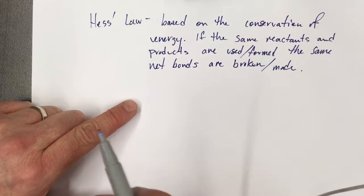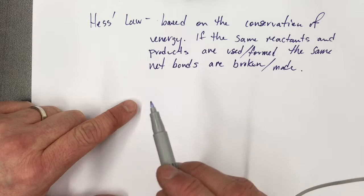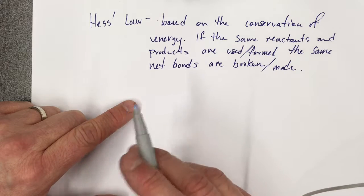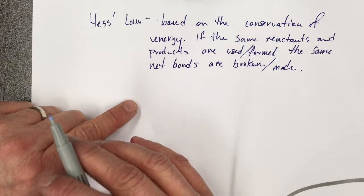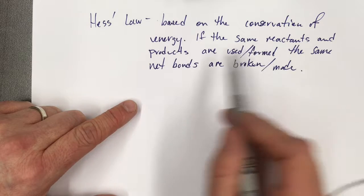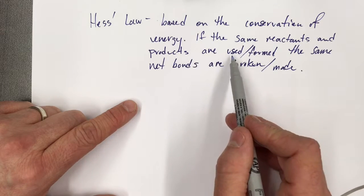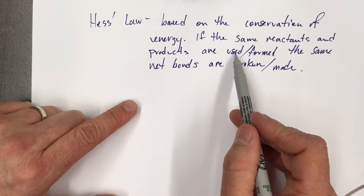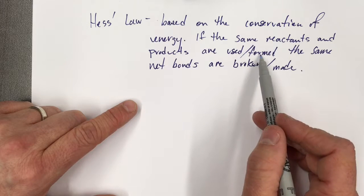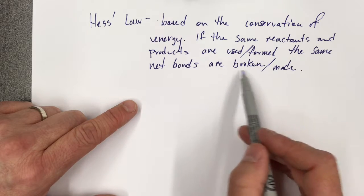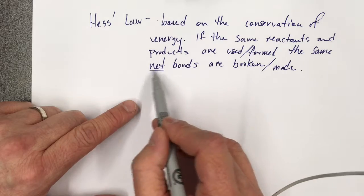But Hess's Law is based on the conservation of energy. So basically, if we're conserving our energy and the same reactants and the same products are used, so the reactants are used, and the products are formed, then the same net bonds are broken or made. And the key here is net.